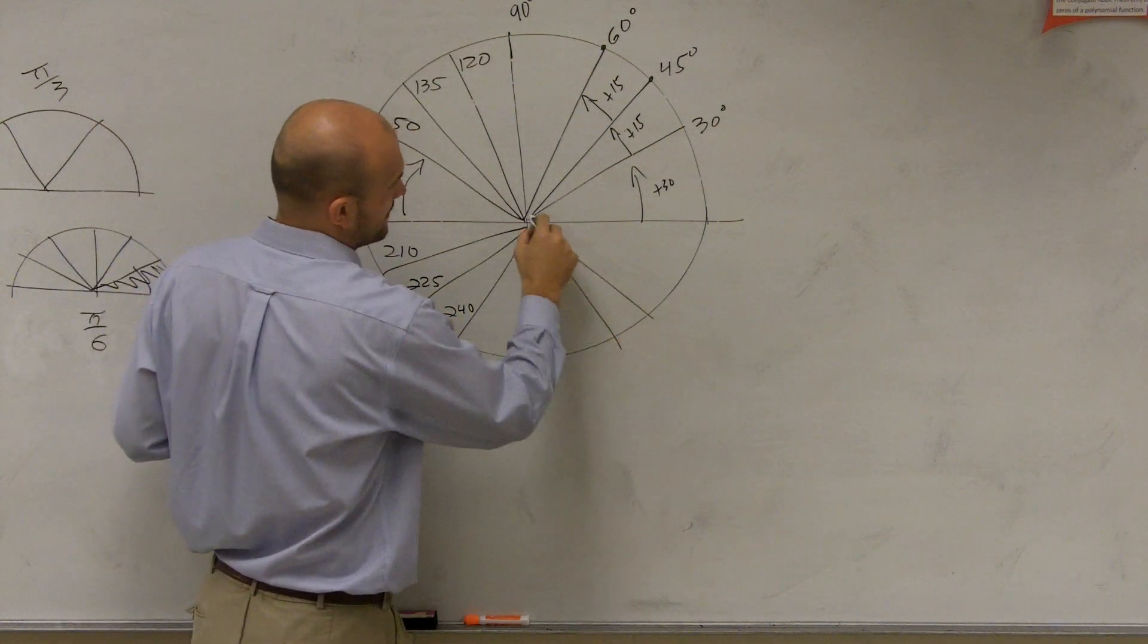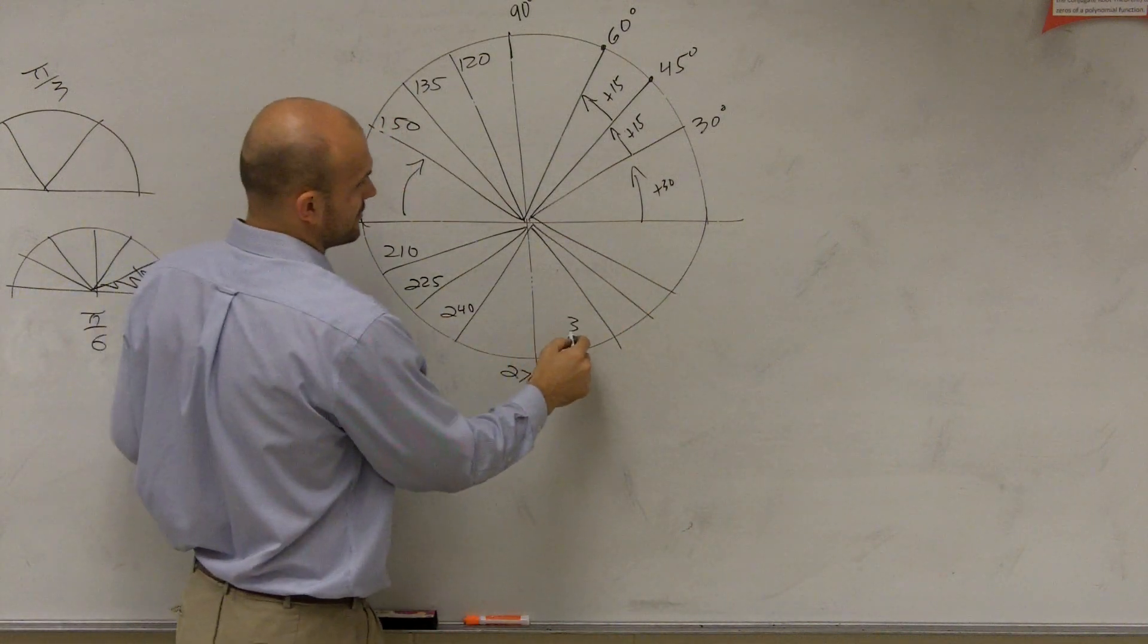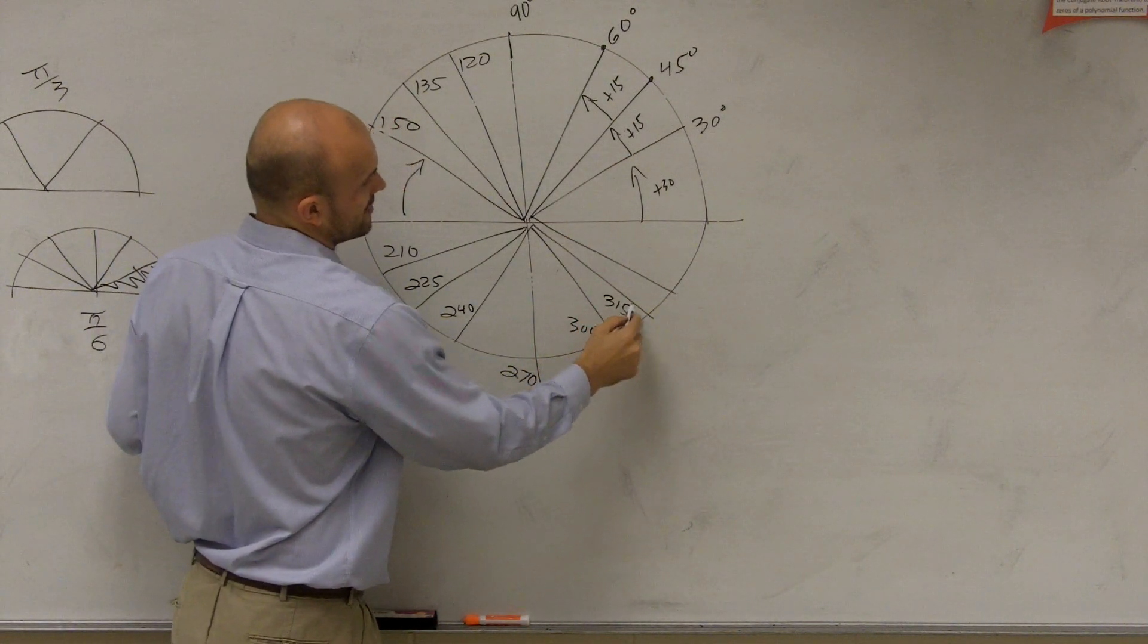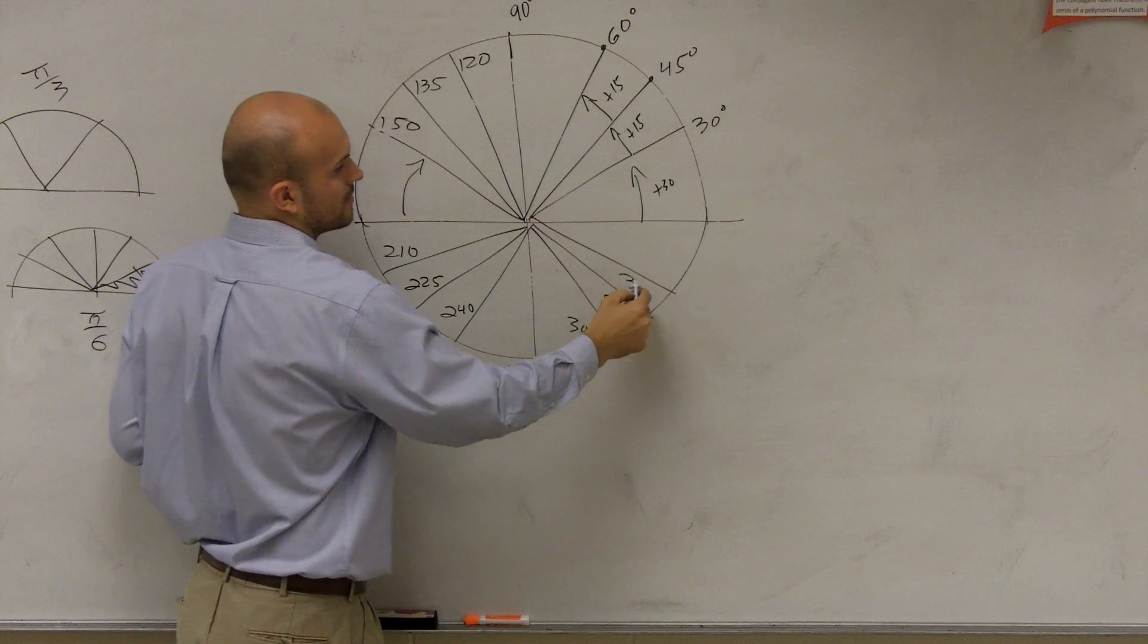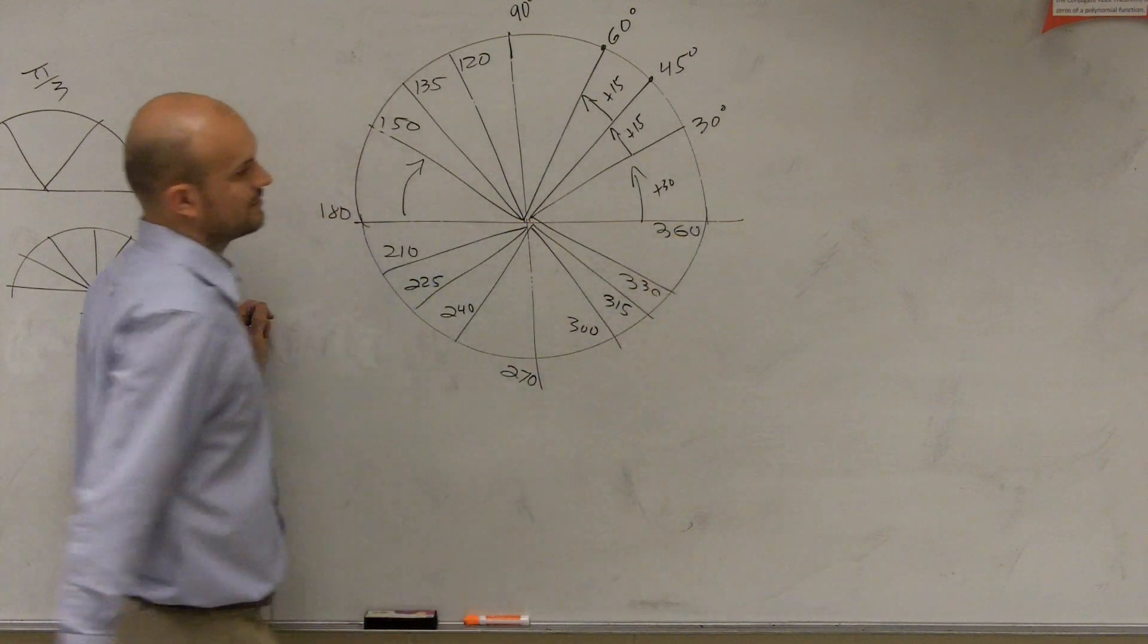Add 30, add 15, add 15. Add 30 to that, you get 300, 315, 330. Add 30, you get 360.